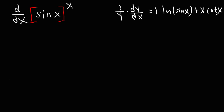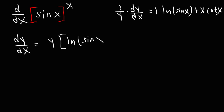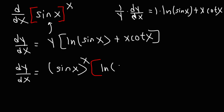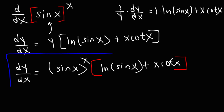Our next step is to multiply both sides by y. So we get dy/dx is equal to y times (ln(sin x) + x·cot x). Replacing y with the original expression, the final answer is dy/dx equals sin x raised to the x, times (ln(sin x) + x·cot x). So now you know how to use logarithmic differentiation to find the derivative of functions that contain a variable raised to another variable.